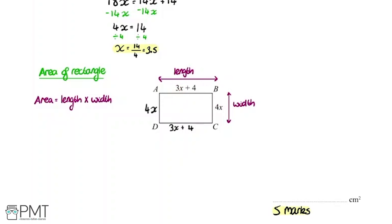What's fantastic is in the previous bit of work we worked out that x equals 3.5. So we're going to replace x with 3.5. We're going to have the area equals length which is 3 multiplied by 3.5 plus 4, and that's going to be multiplied by the width, 4 multiplied by 3.5.